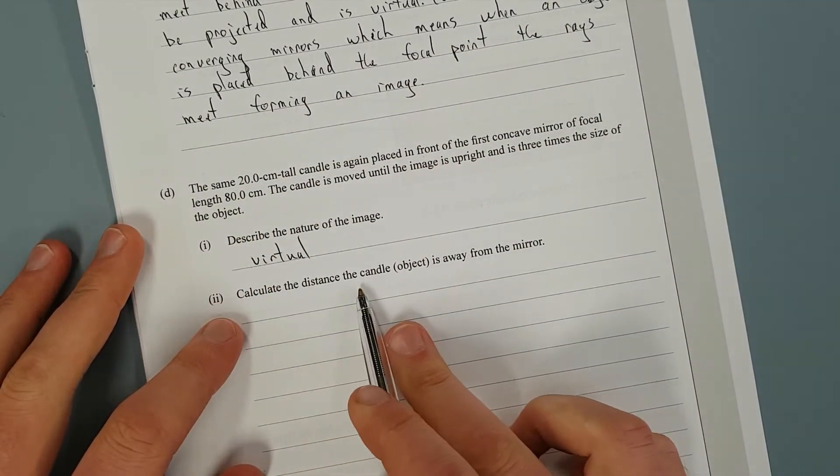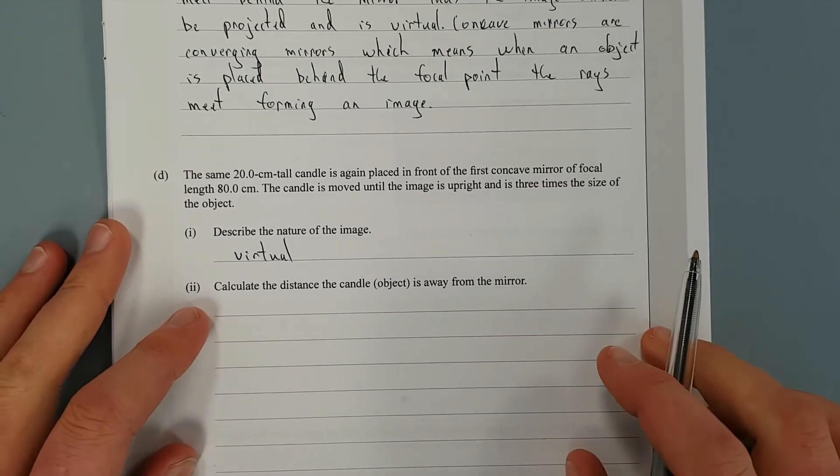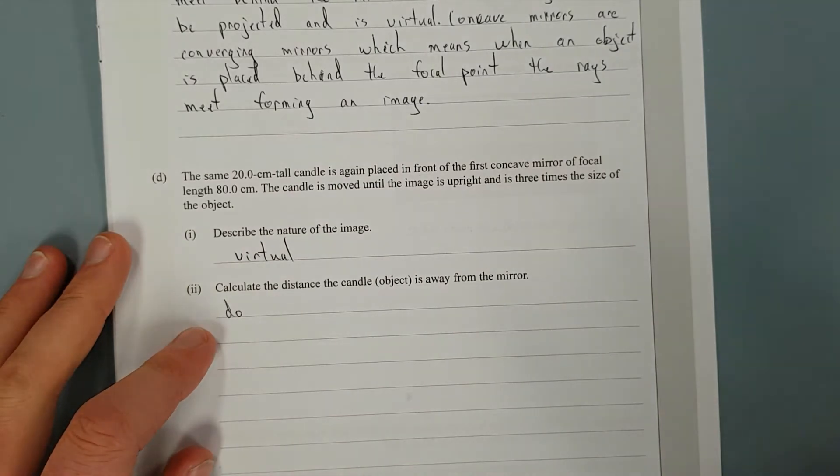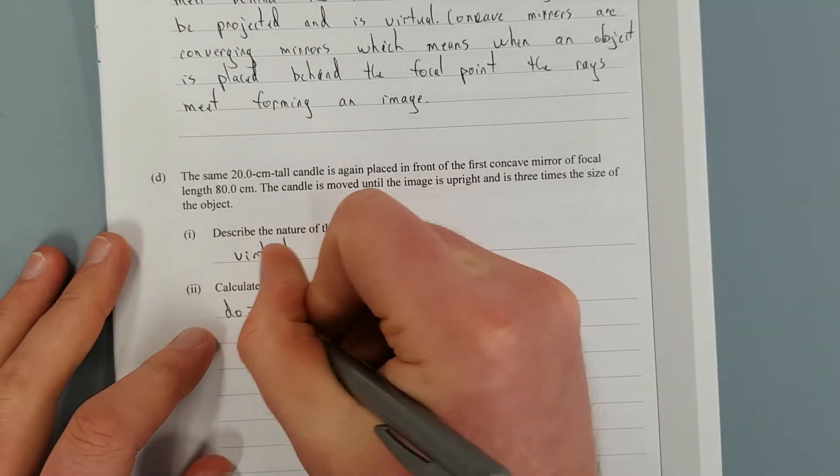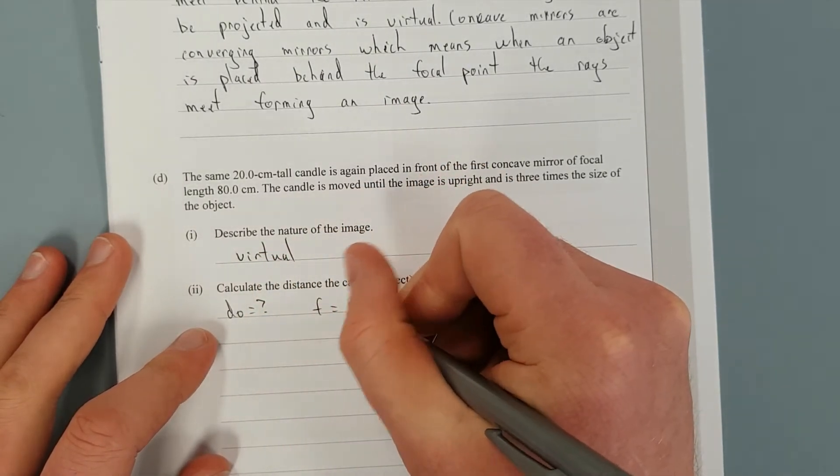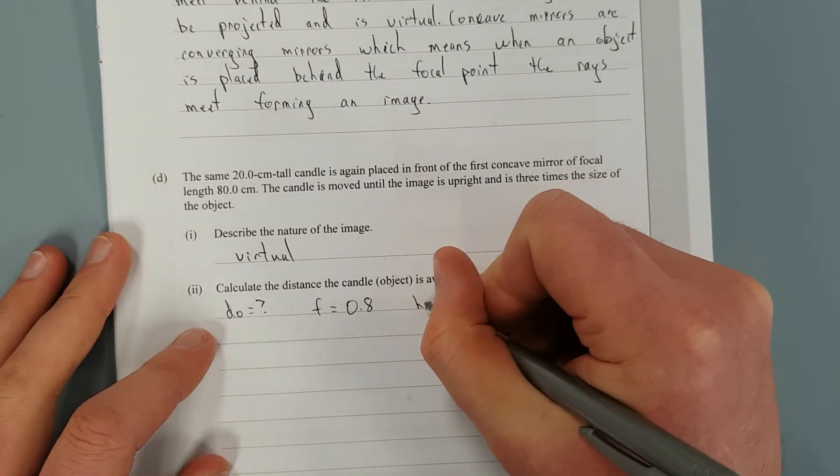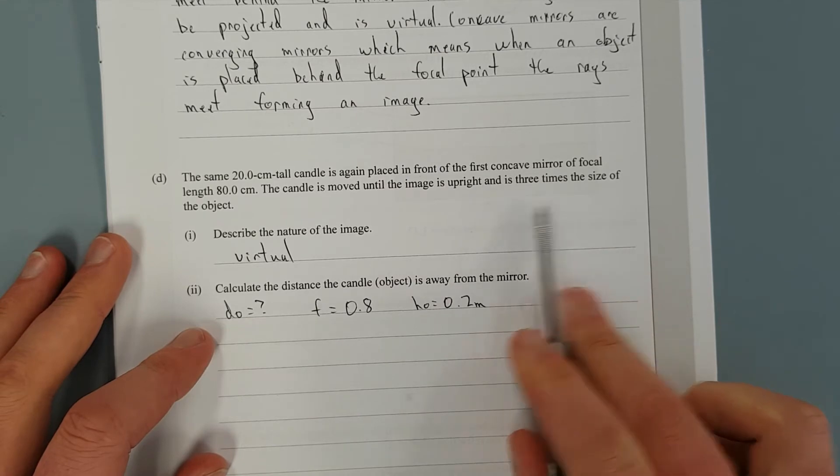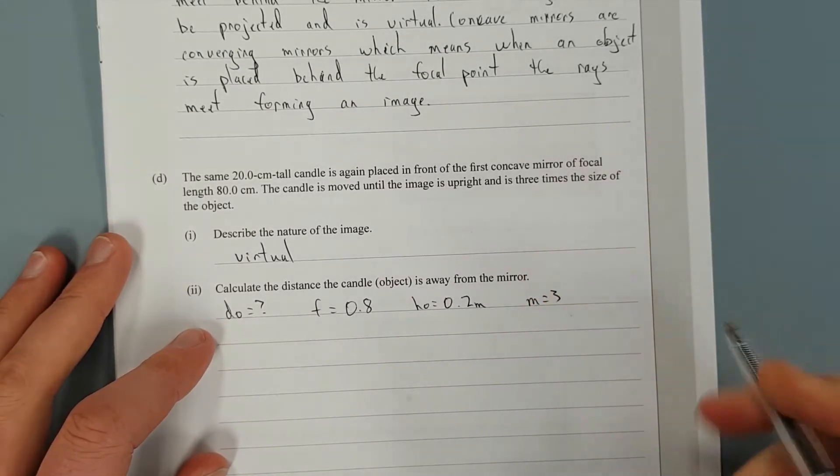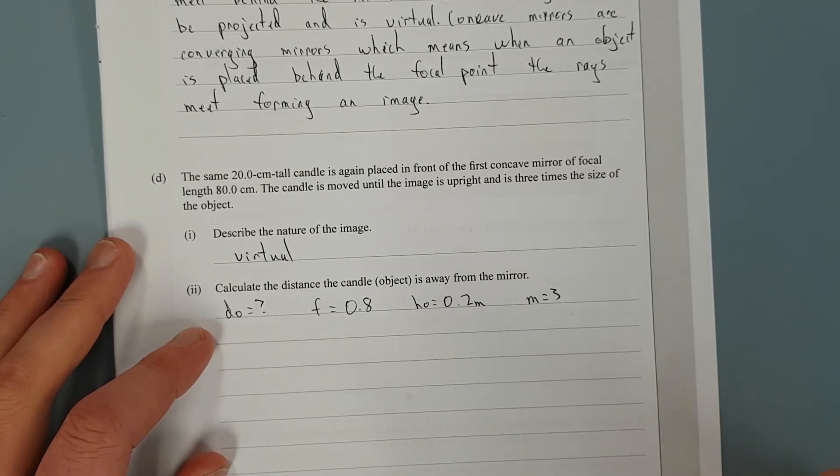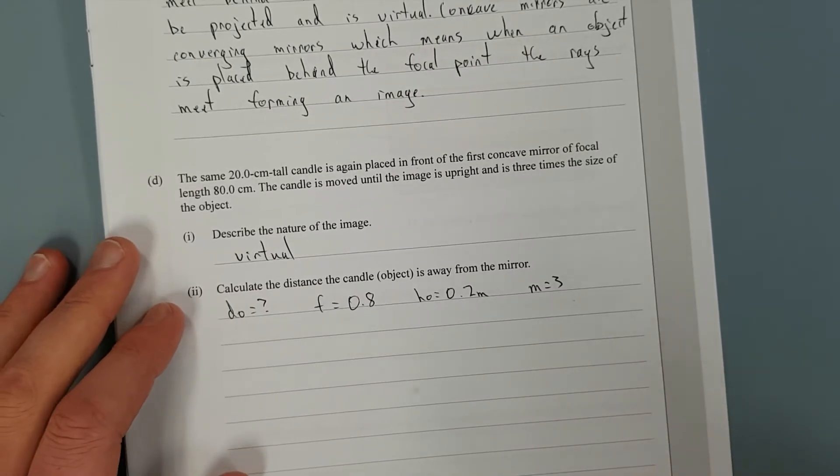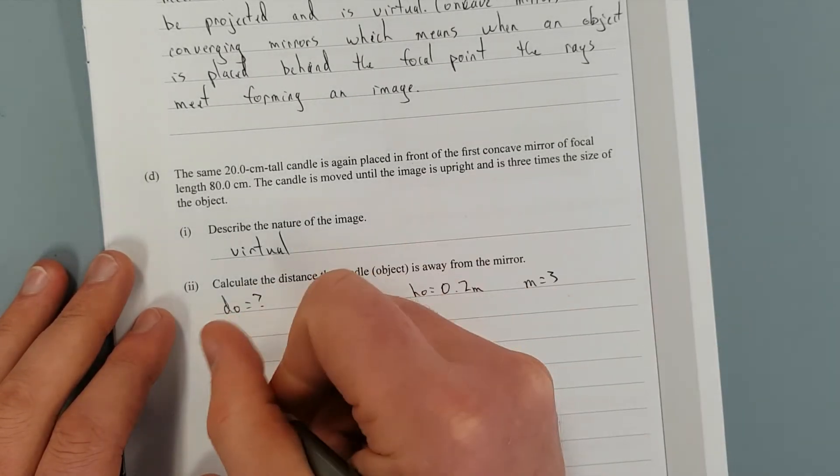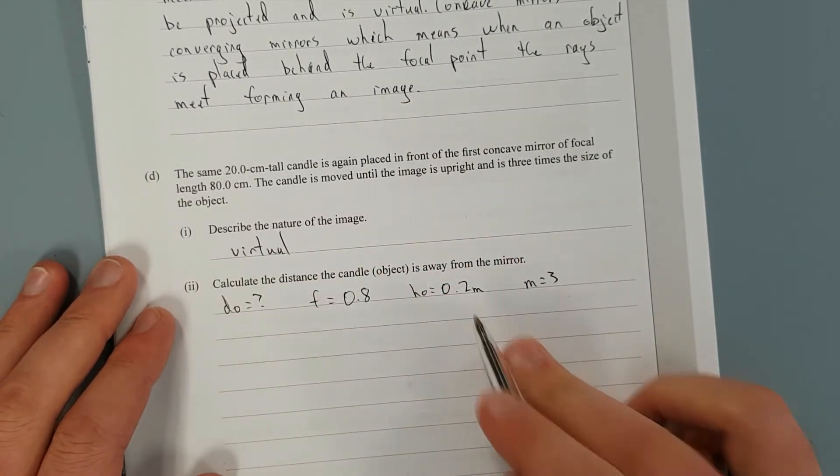Calculate the distance the candle object is away from the mirror. So what we're looking for is DO equals question mark. The focal point is 0.8 meters. The height of the object again is 0.2 meters. It's three times the size, the image is three times the size of the object. So we've got the magnification is equal to three. And I think that's really about all we need. So in order to find this, what we need to do is, we have the focal point, we're trying to find DO. So we probably want to find DI, whatever that happens to be.